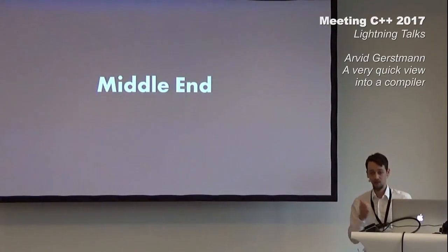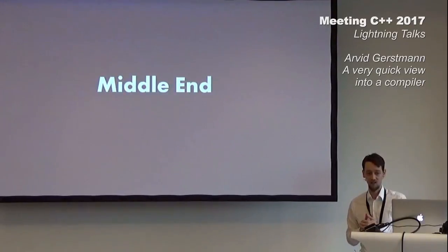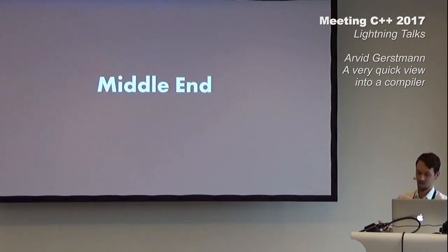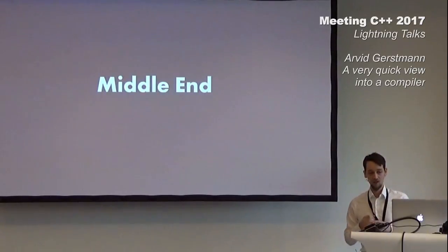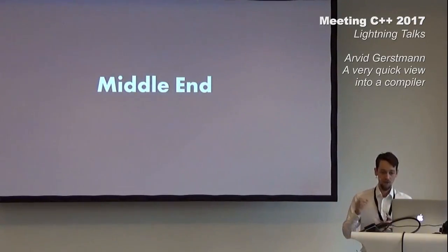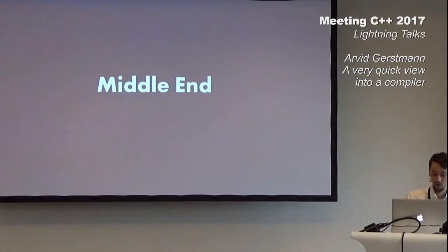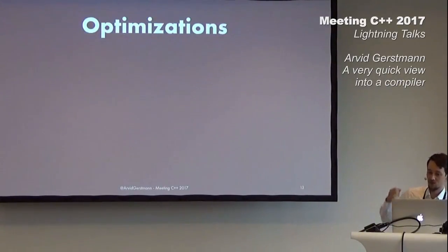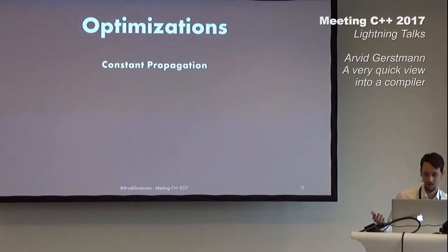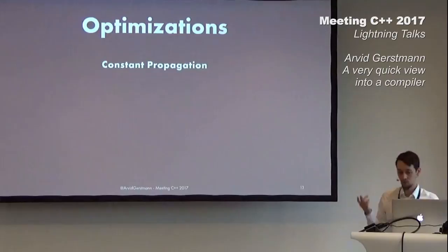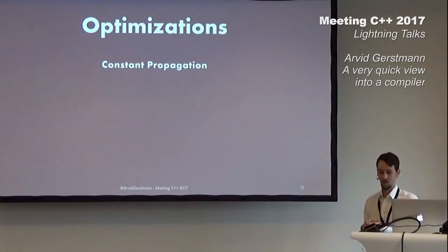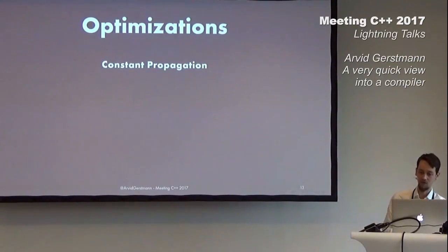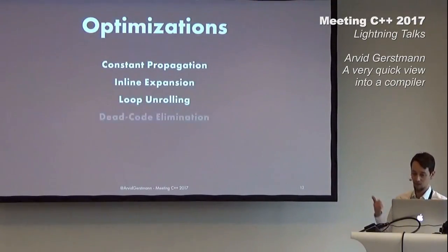Having received the IR, the job of the middle end is to analyze and perform optimizations on it. This is often done in so-called passes. An optimization pass transforms IR without changing observable side effects, with the goal of reducing size, improving runtime, or both. For example, propagating constants: in our earlier example, the compiler would likely optimize the add function to return directly the literal 15, since both operands were known at compile time. We can also inline functions, unroll loops, eliminate dead code, parallelize sections of code, and many more.